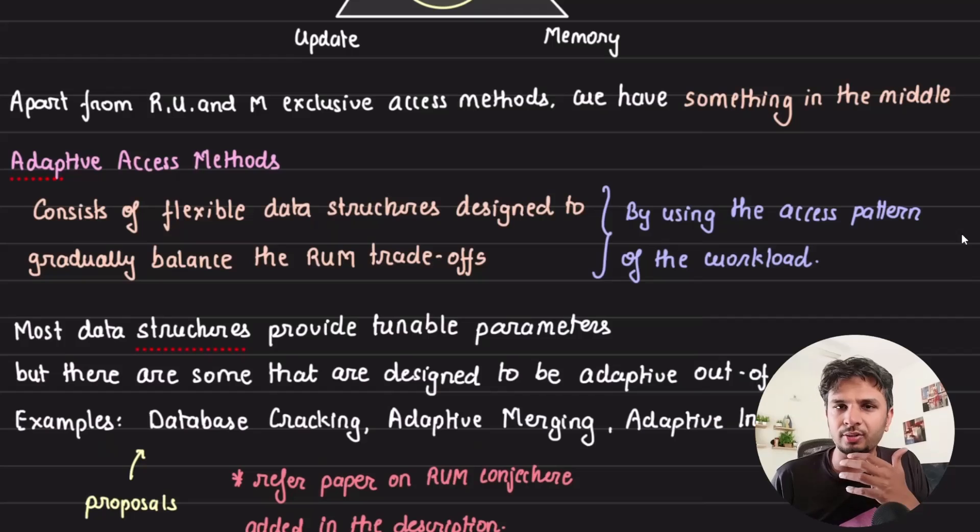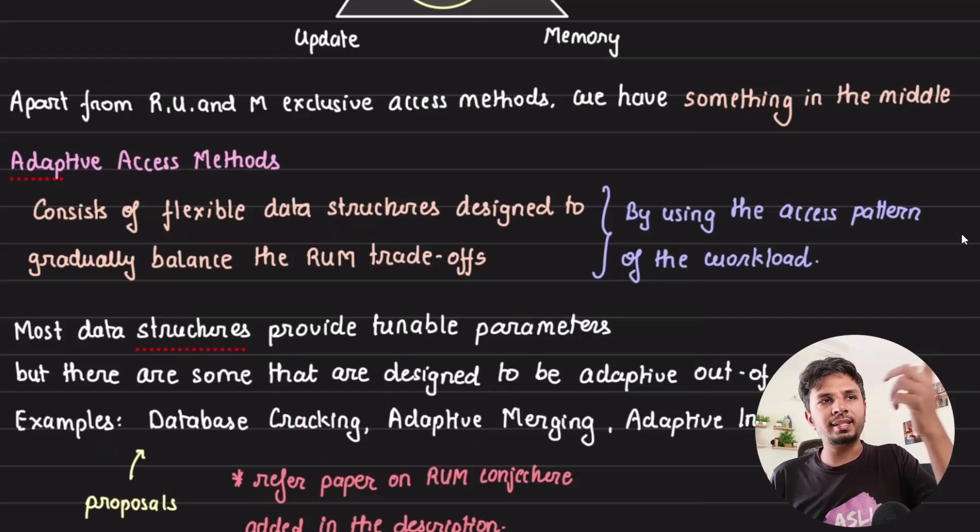Whenever you're reading about any database, try to categorize it: what kind of trade-off is it taking, what is it gaining, what is it losing? You'll form an understanding to make the right decision with your database. This entire thing is a very short summary of a paper called the RUM conjecture. I'll link that paper in the description. They've covered other things in detail which I'm sure you'd love to explore. I hope you found it interesting and amusing. That's it for this one. I'll see you in the next one. Thanks a ton.